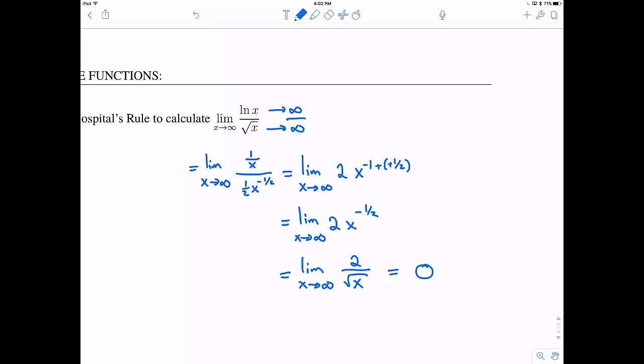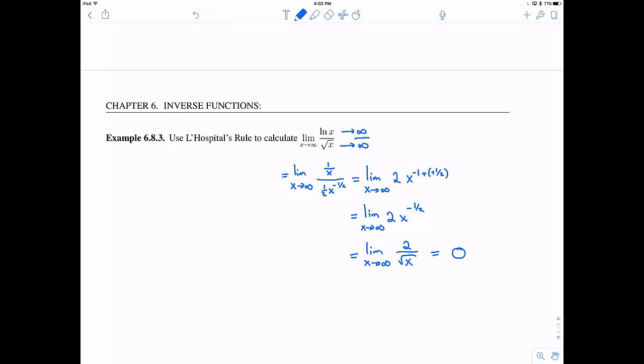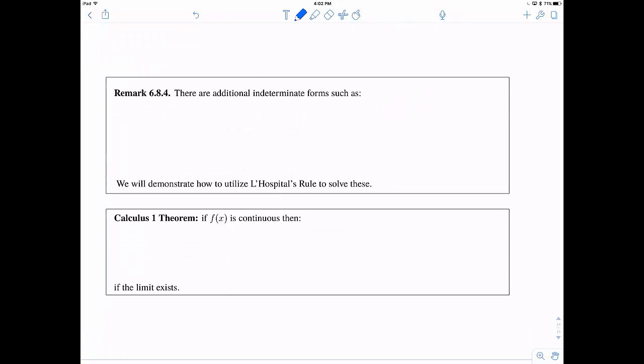But the claim is that there are many more indeterminates out there. So some of the additional indeterminates out there are types of the form. And so the first one could be like 0 times infinity. I'd have no idea what this heads towards. If it heads towards 0 or infinity or 1 or 5 or what? Another one's going to be infinity minus infinity. Again, I don't know which infinity is bigger in some sense. I have no idea what this is going to head towards.